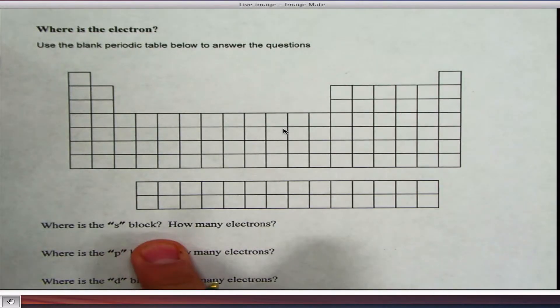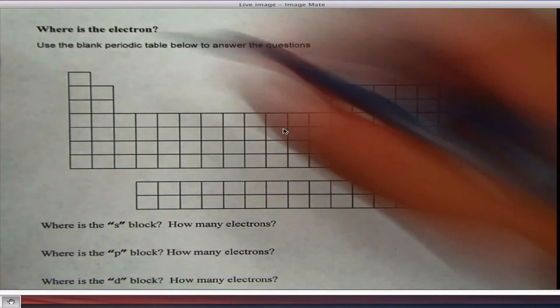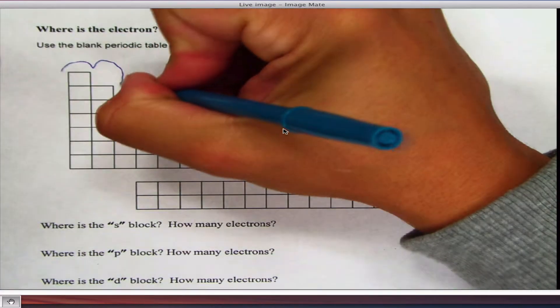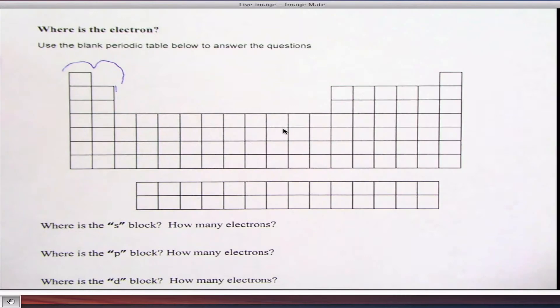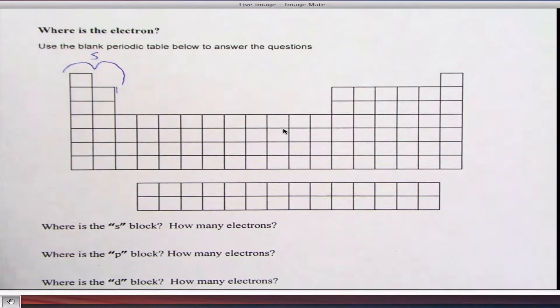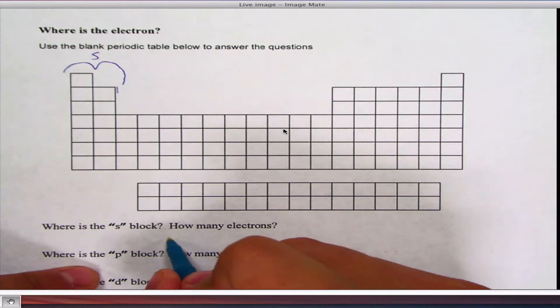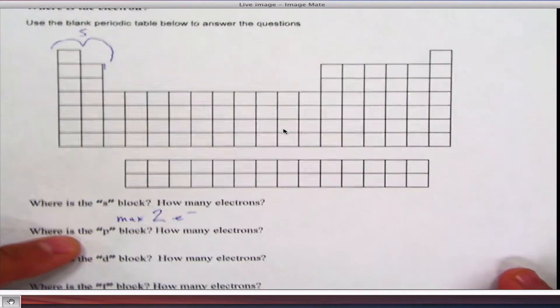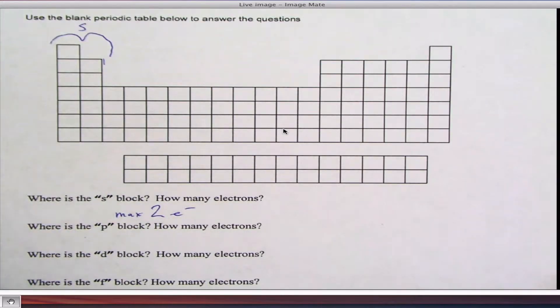The first one is called the S block. The S block is located right here. These two tall columns. This is the S block. The S block can have a maximum of two electrons. Max. So there's your first block. It's called the S block.